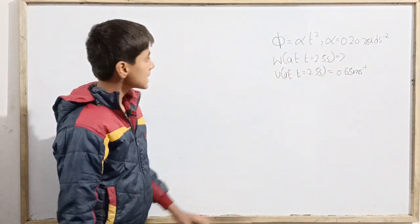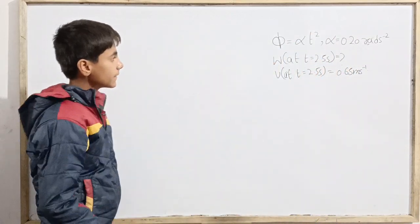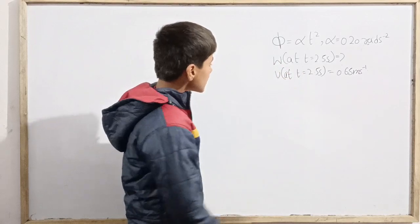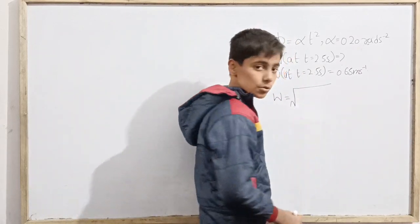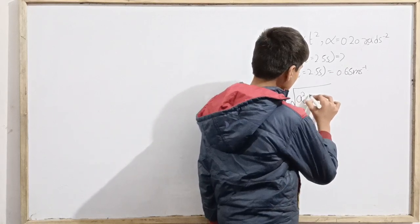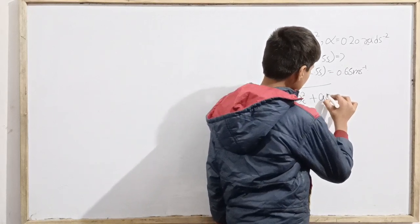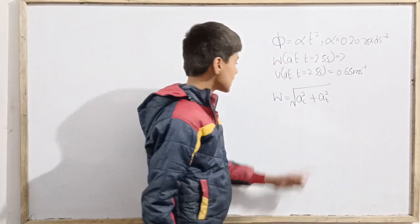So we have to basically do that phi is already given as alpha t squared. Since w, we have to write as the centripetal acceleration squared plus the tangential acceleration squared, square root, right?